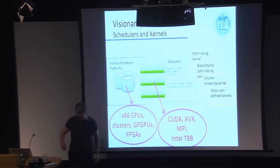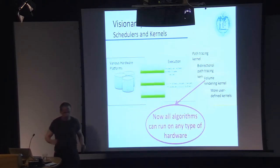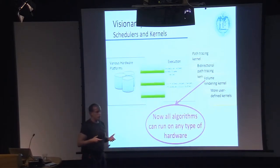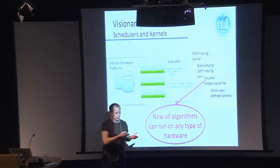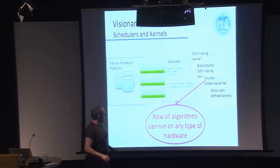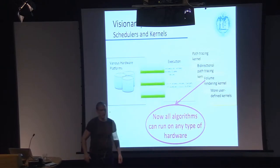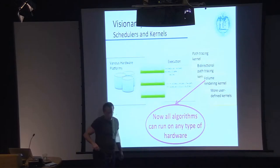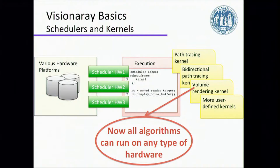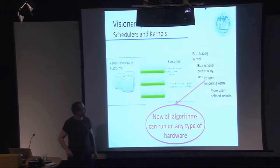You have your target hardware — GPGPUs, x86 CPUs, and so on — and you write or select a scheduler for that type of hardware. This is great because then immediately all the algorithms you have already implemented are parallelized or optimized for that hardware.